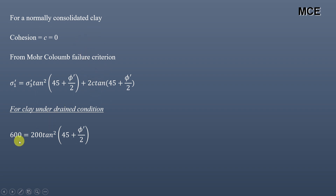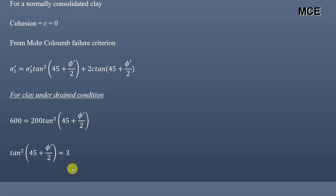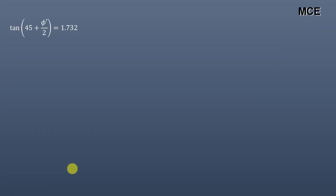So we get the equation: 600 = 200 · tan²(45 + φ'/2). Solving this equation we get tan²(45 + φ'/2) = 3, or tan(45 + φ'/2) = 1.732.